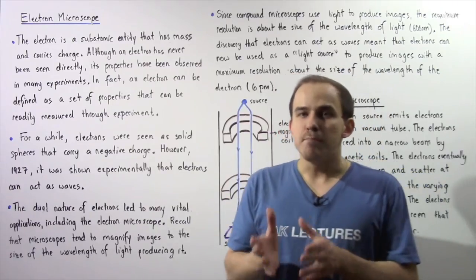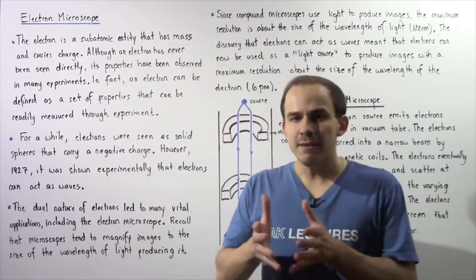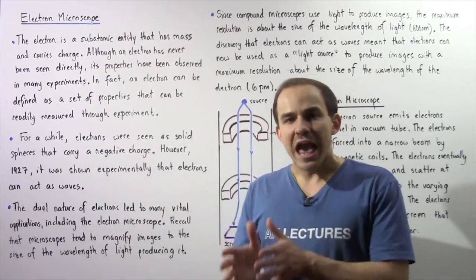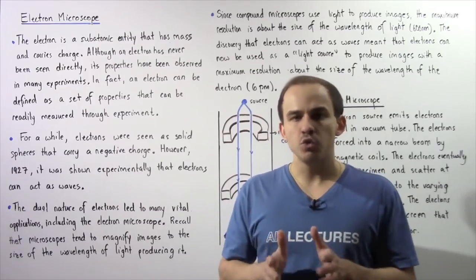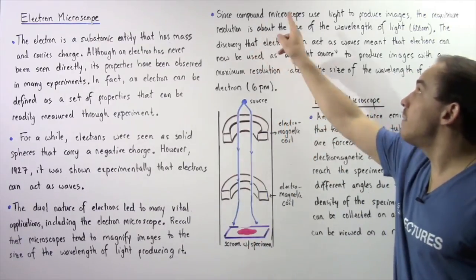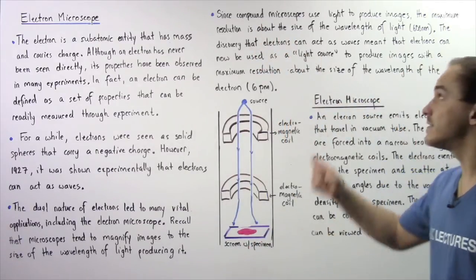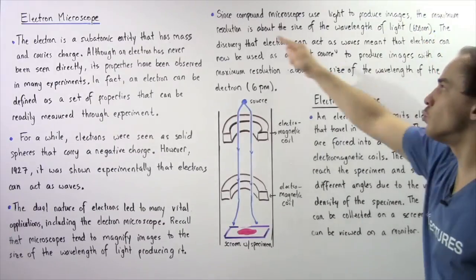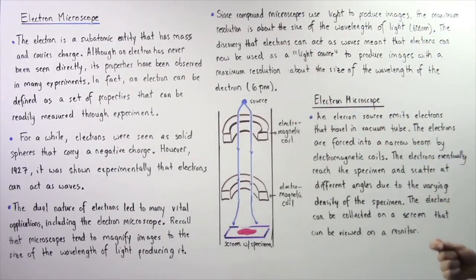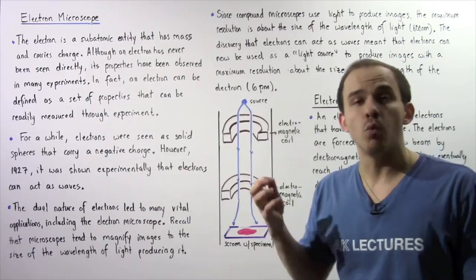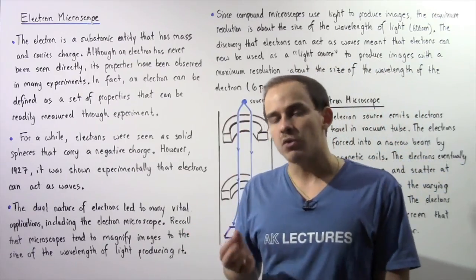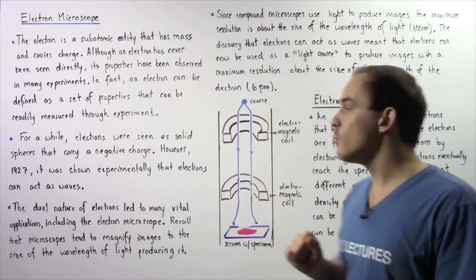Now recall that microscopes basically magnify images to the size of the wavelength that that particular microscope uses. Since compound microscopes use visible light to produce images, that implies that the maximum resolution of a compound microscope is about the size of the wavelength of visible light, and that's equal to about 600 nanometers.